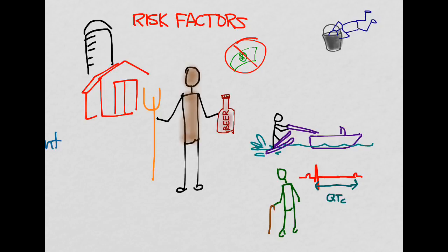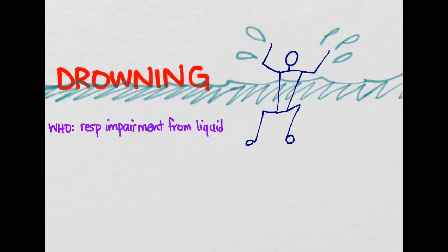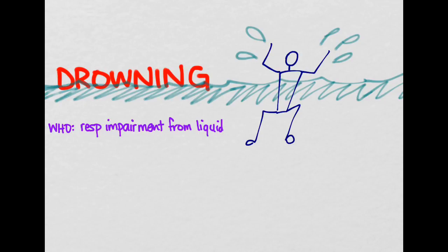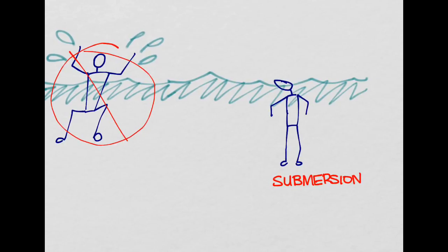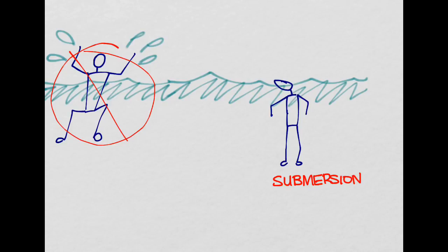Next, let's talk about the pathophysiology of drowning. When patients drown on TV, it's a highly visible behavior — they're splashing, shouting, and screaming for help, making very violent movements. This is actually called aquatic distress, and this is not drowning. What actually happens when someone is about to drown is they start becoming a lot more still and make less noise, and it can actually look to the untrained person like the patient is swimming calmly.